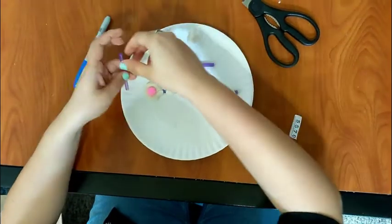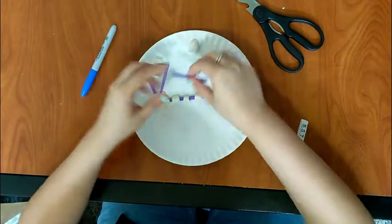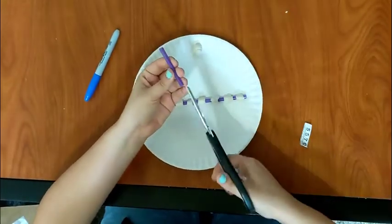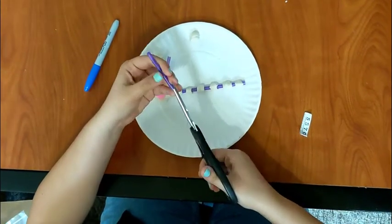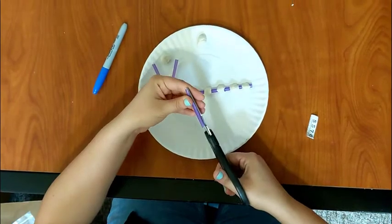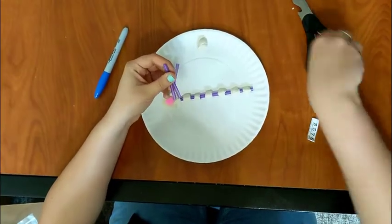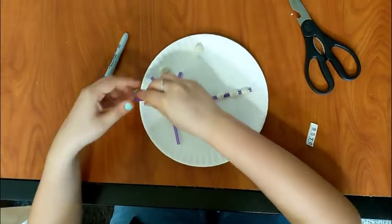So we're going to stick these pieces in the sides. I'm going to do this again through this piece. And parents, you can help your children with this portion if they are not agile with their scissors. And stick them here.